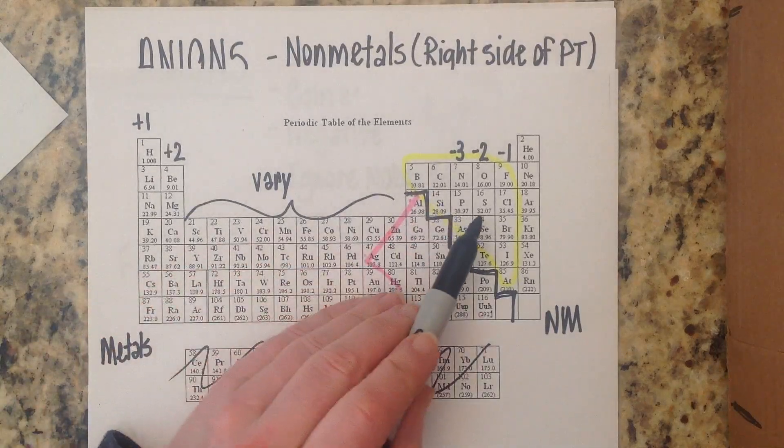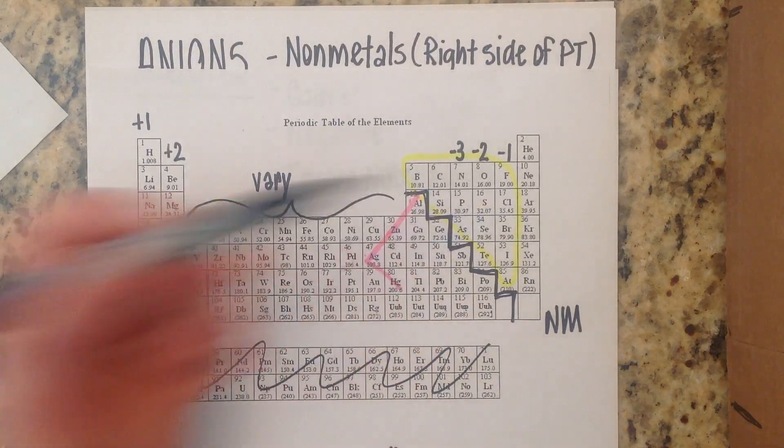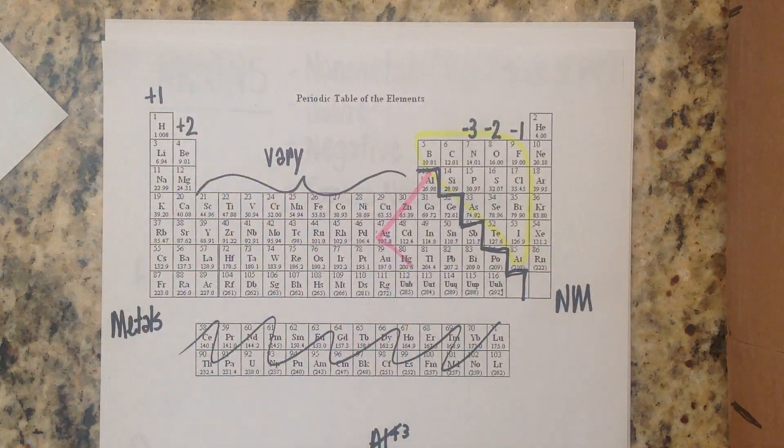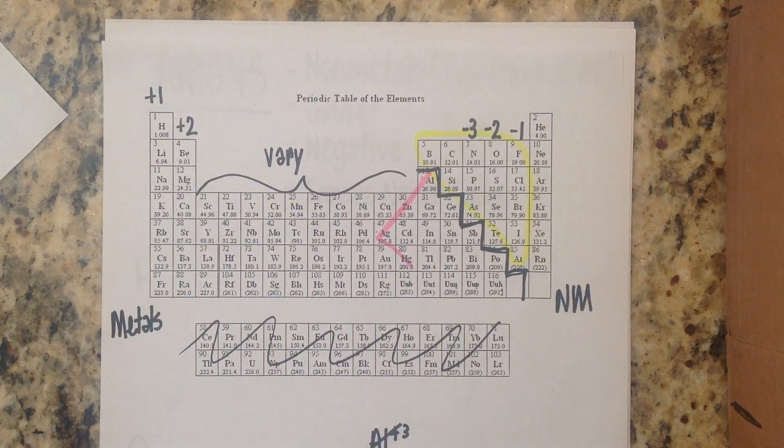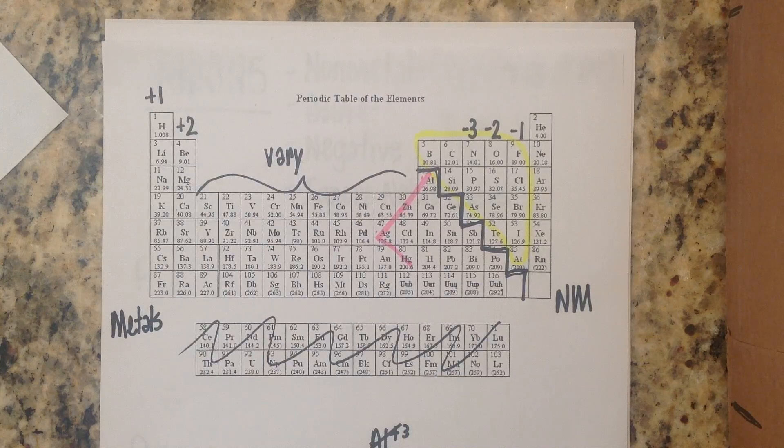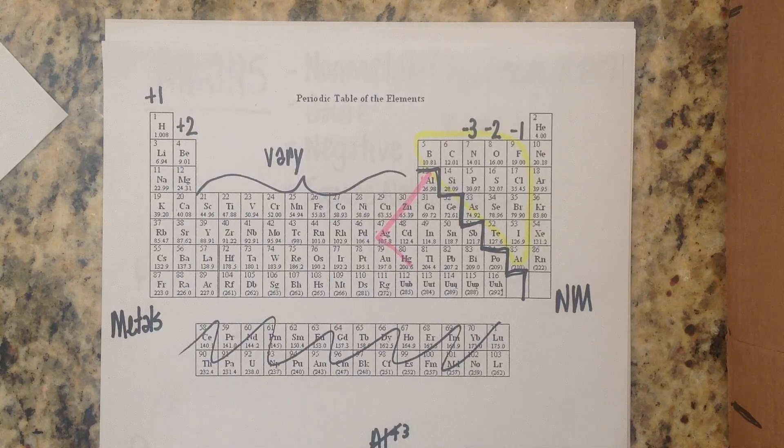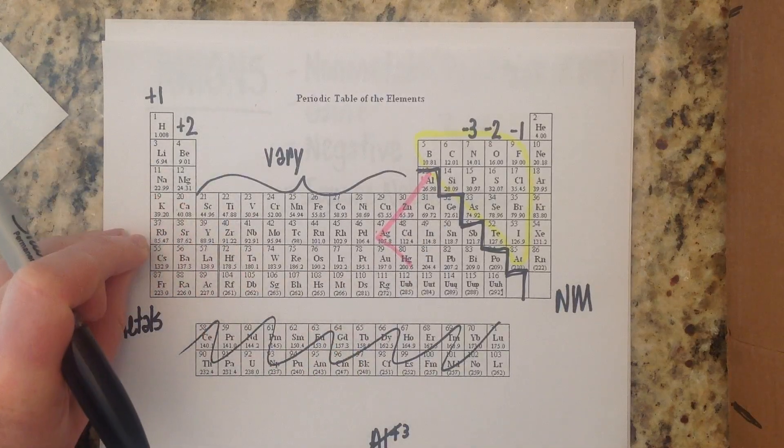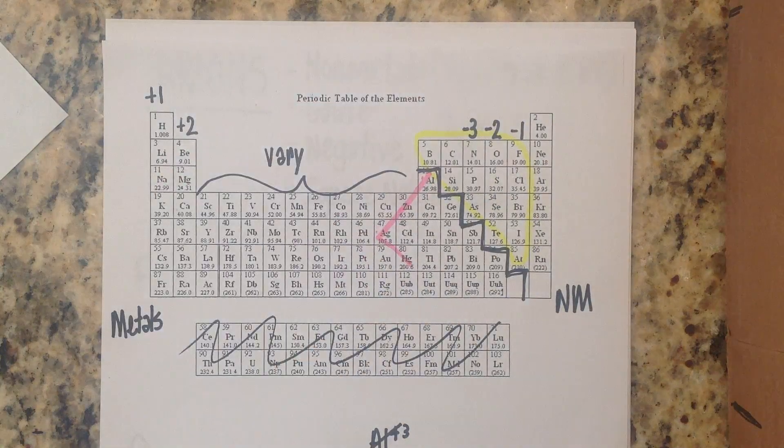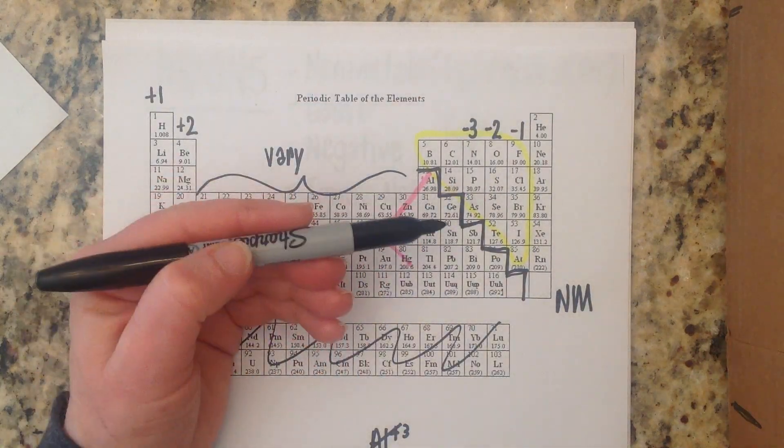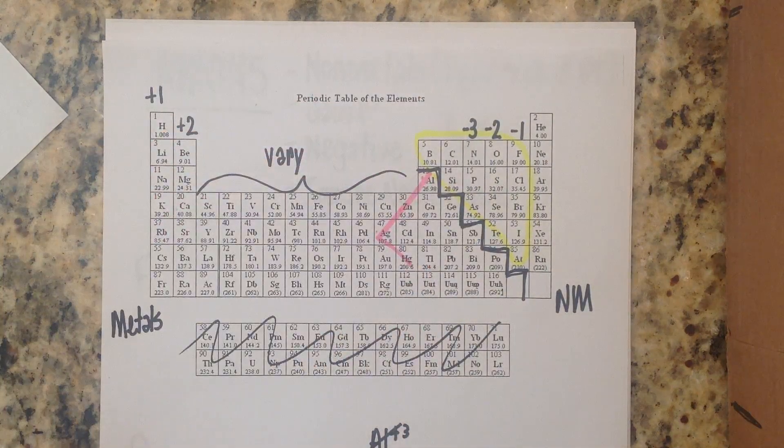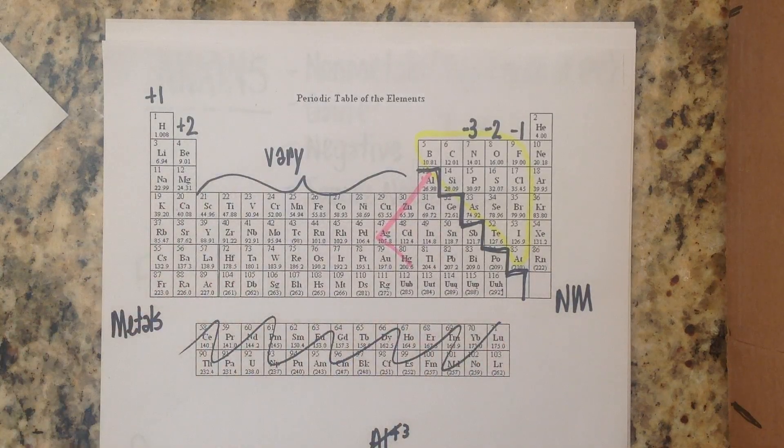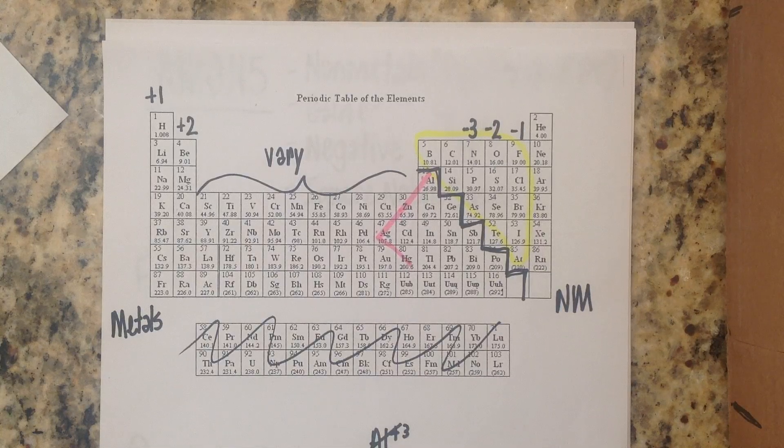So what we know is that anions are getting really close to having that full octet and because they're getting so close to eight they start getting very desperate, very interested in getting enough electrons to reach that full octet. So unlike metals which will give away electrons to achieve the look of a noble gas, non-metals are going to steal electrons to look like a noble gas and who do they steal from? They're going to steal from the wimps over here on the left hand side of the periodic table.